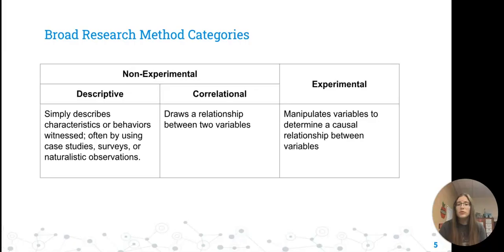With correlational research, we're going to try to use the data that we collect to draw relationships between two variables. But nothing is being controlled in these non-experimental research methods. If we start controlling and manipulating things, then we have an experiment on our hands, which allows us to determine if there's a causal relationship between variables.